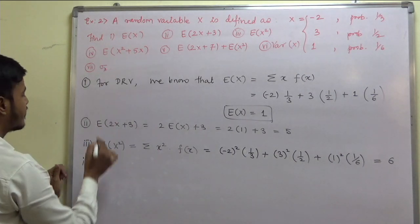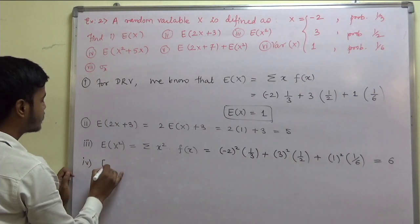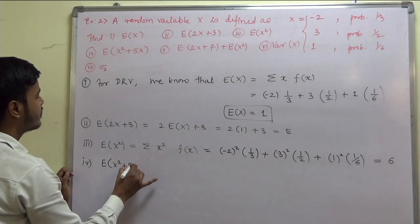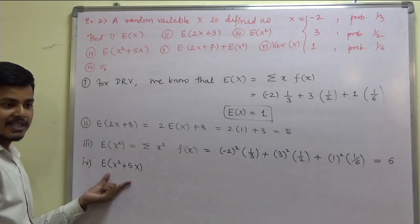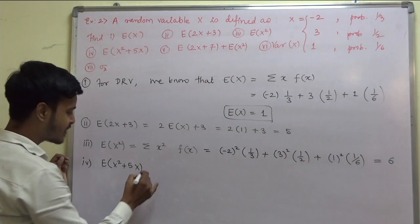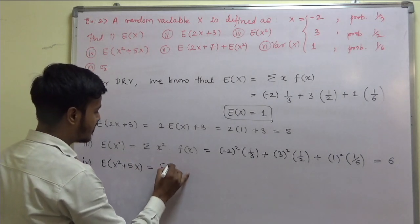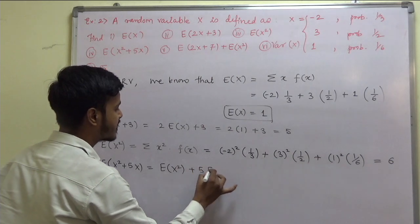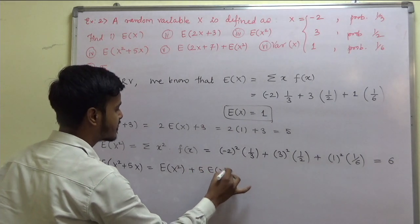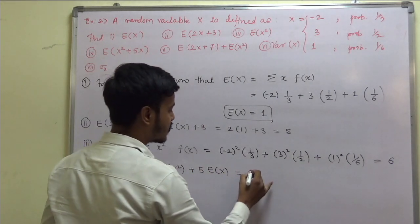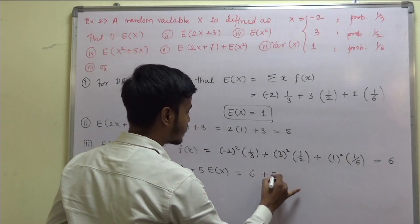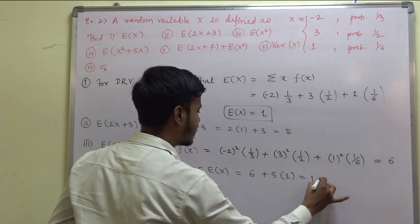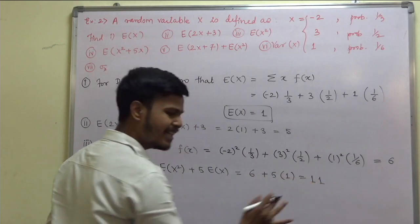The fourth one is expectation of x squared plus 5x. This equals expectation of x squared plus 5 times expectation of x. Expectation of x squared is 6, plus 5 times expectation of x which is 1, so the answer is 11.